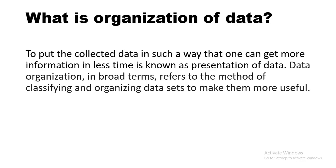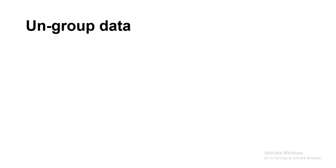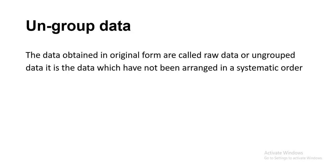Organization of data refers to methods of classifying and organizing a set of data to make it more useful. With organized data, we can retrieve specific information quickly. There are two types of data: ungrouped data and grouped data. Ungrouped data is data obtained in its original form — called raw data — which has not been arranged in any systematic order.